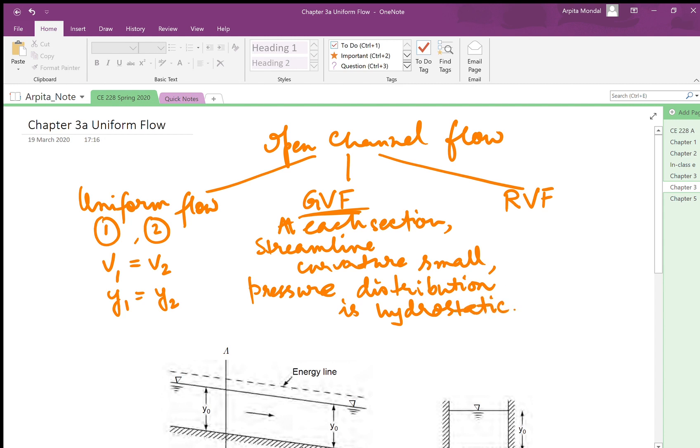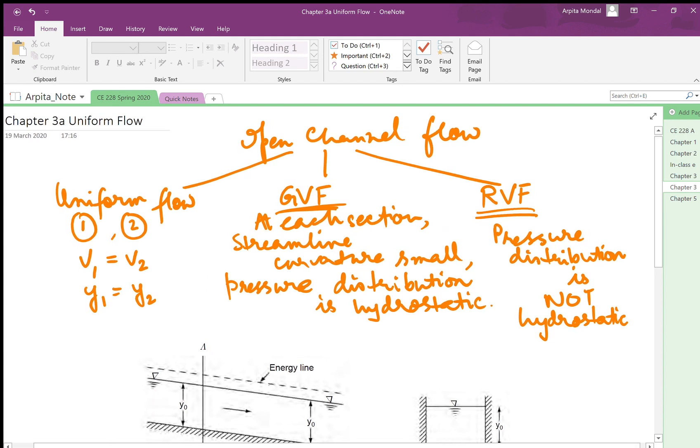In rapidly varying flow, as the name suggests, the flow properties change very rapidly and the streamline curvatures are large, so pressure distribution is not hydrostatic. And for each of these three cases you may have steady versus unsteady flows. When the flow properties do not change with time, the flow is called a steady flow, and when it changes with time it's called an unsteady flow.